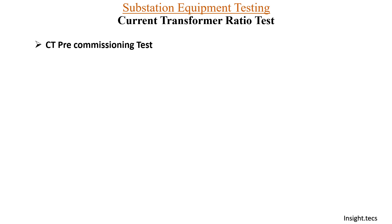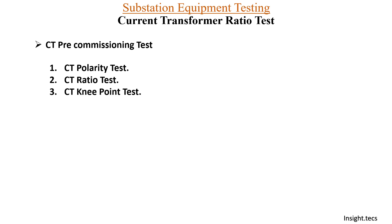There are a few pre-commissioning tests that are performed on the current transformer. We have seen the CT polarity test. CT ratio test is what we are going to learn in today's video. There is also the CT knee point test, the 10 delta test, and IR value measurement. We will see all these tests in detail in our further videos.